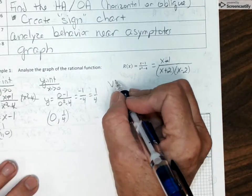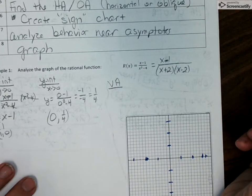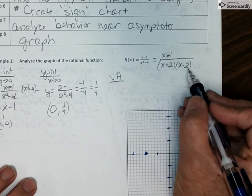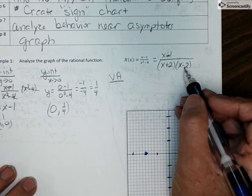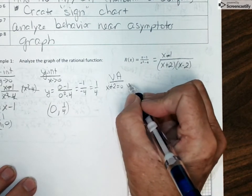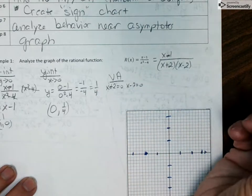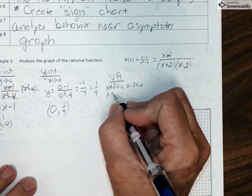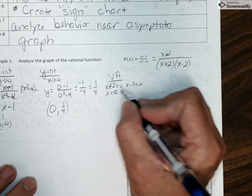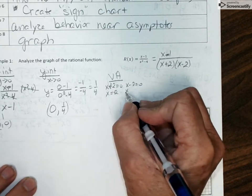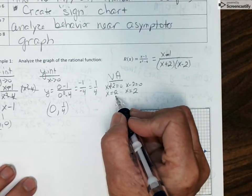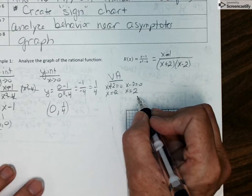Moving on to vertical asymptotes. So this was step 4. Our vertical asymptotes are found from the denominator, setting each factor equal to 0 and solving for x. So x plus 2 equals 0, x minus 2 equals 0. So this one's going to give me x equals negative 2. This one, when I add 2, I get x equals positive 2. So my vertical asymptotes are at x equals negative 2, x equals positive 2.